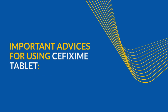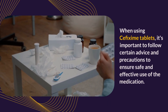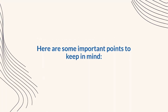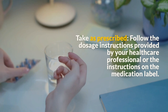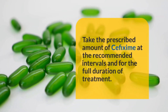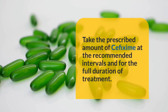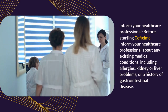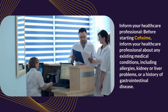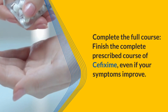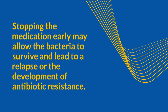Important advice for using Suffixime tablet. When using Suffixime tablets, it's important to follow certain advice and precautions to ensure safe and effective use of the medication. Follow the dosage instructions provided by your healthcare professional or the instructions on the medication label. Take the prescribed amount of Suffixime at the recommended intervals and for the full duration of treatment. Before starting Suffixime, inform your healthcare professional about any existing medical conditions, including allergies, kidney or liver problems, or a history of gastrointestinal disease. Finish the complete prescribed course of Suffixime, even if your symptoms improve. Stopping the medication early may allow the bacteria to survive and lead to a relapse or the development of antibiotic resistance.